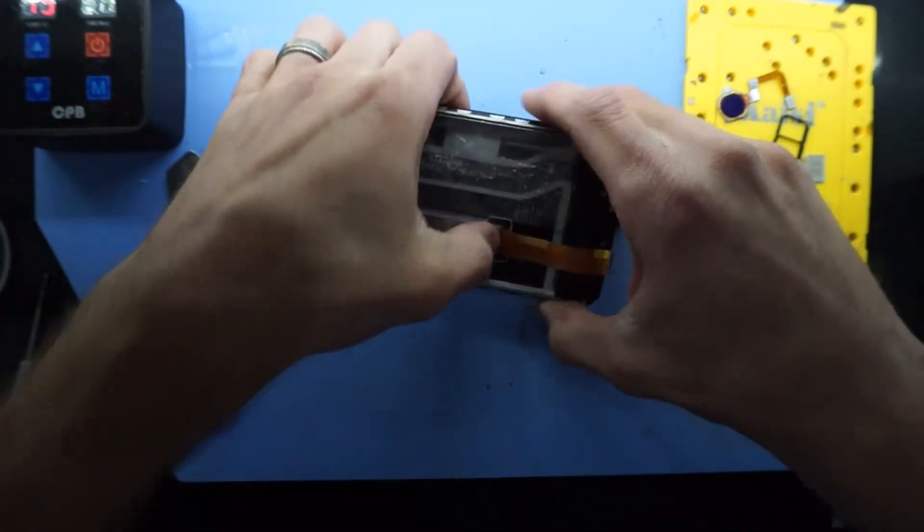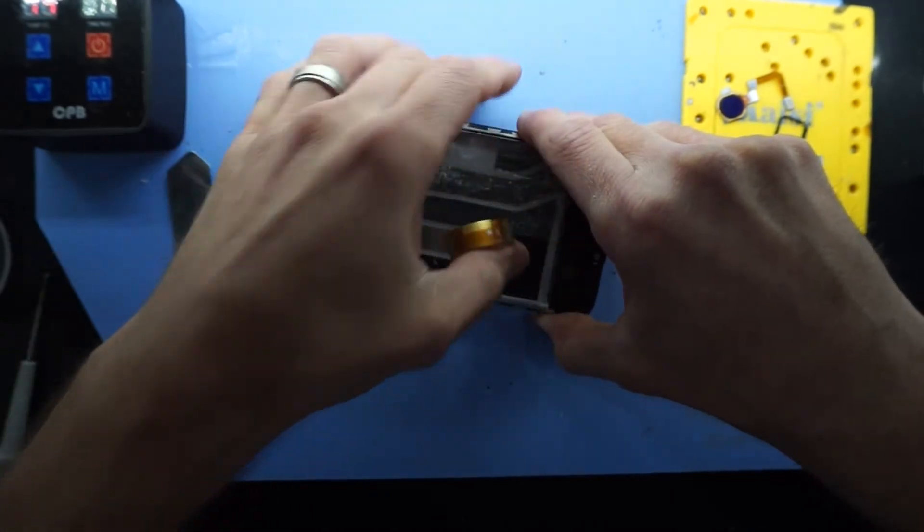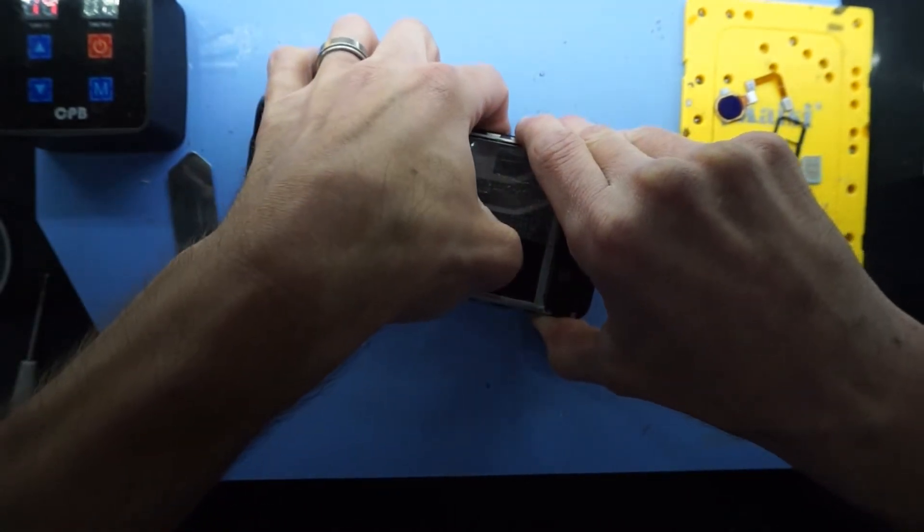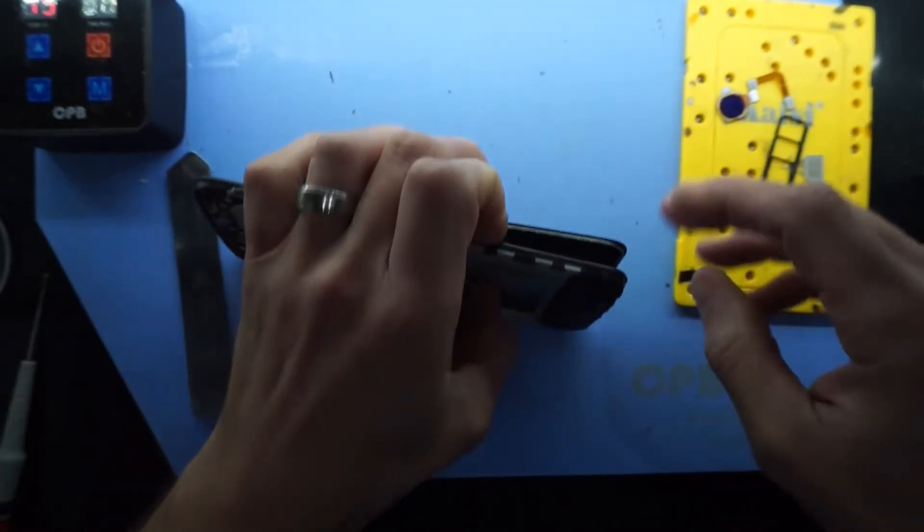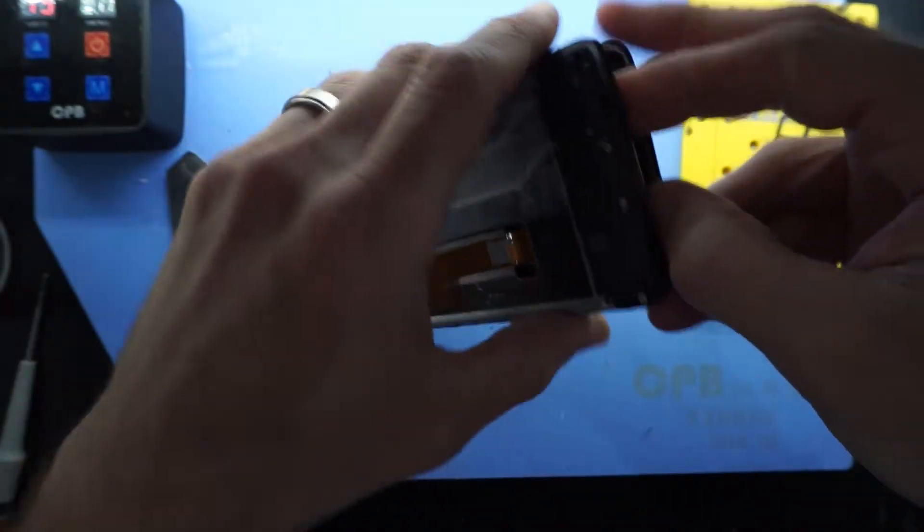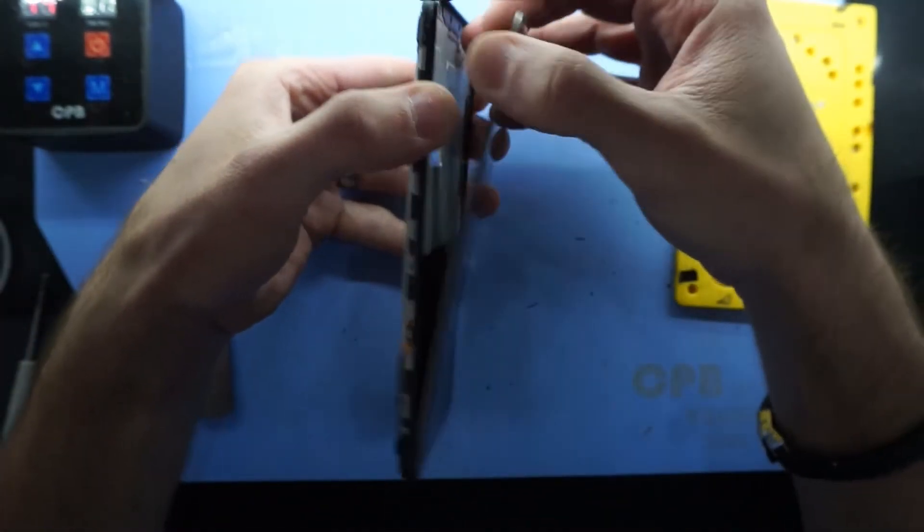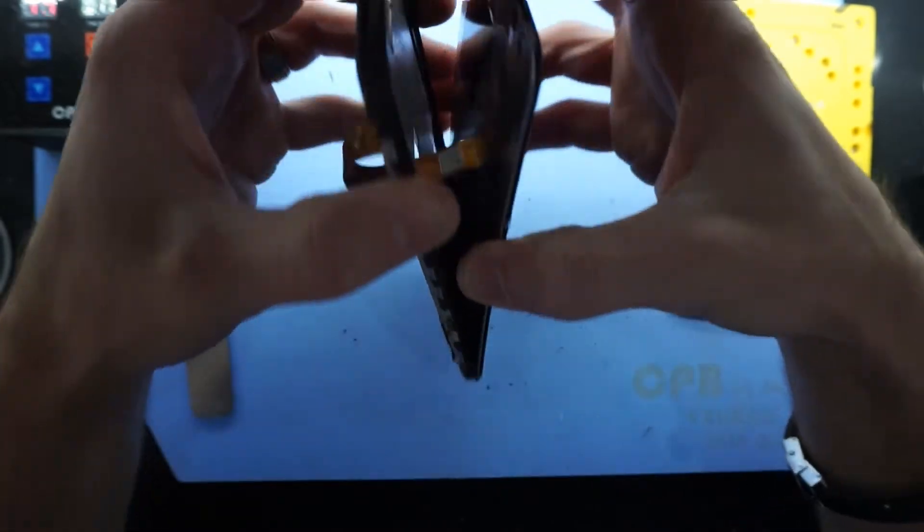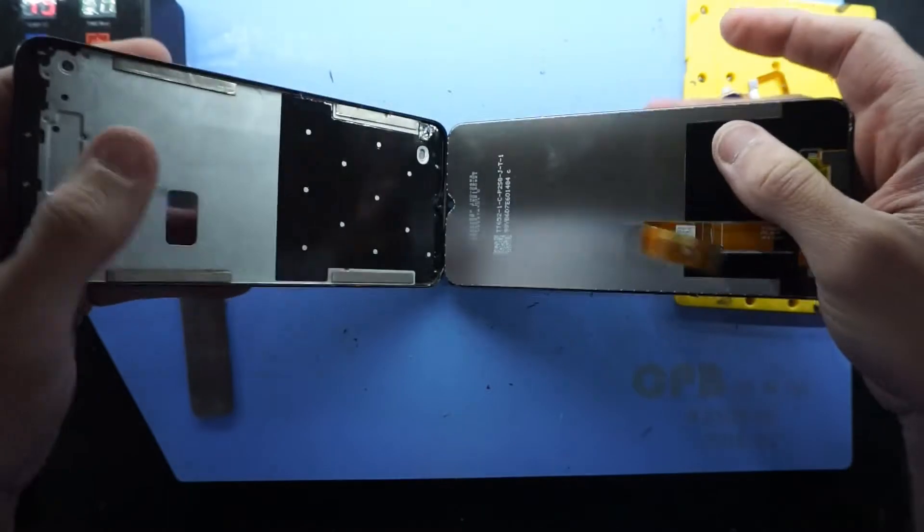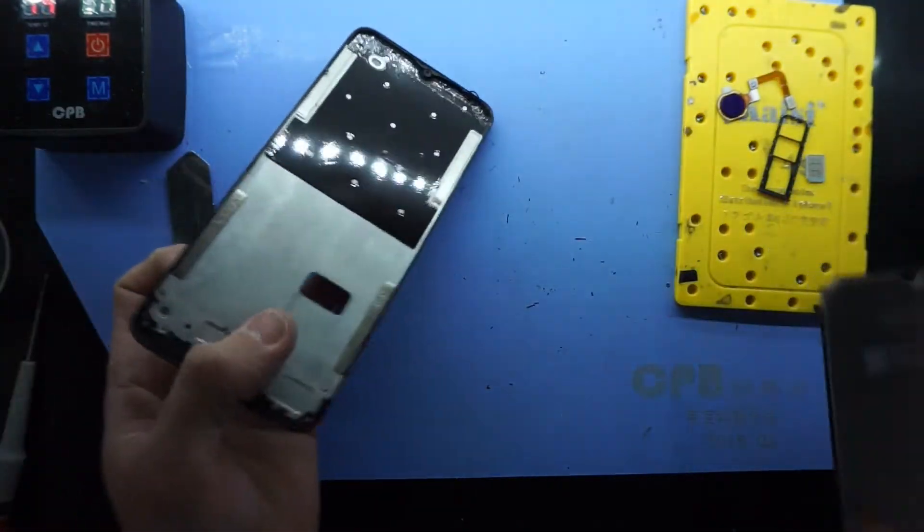And now I'm going to use a flat head screwdriver to try and push this original screen out. I don't know, don't even need to do that. Just my thumb. Now if you do it pretty well, you should be able to leave the, or pretty much not lose any glass under the frame.